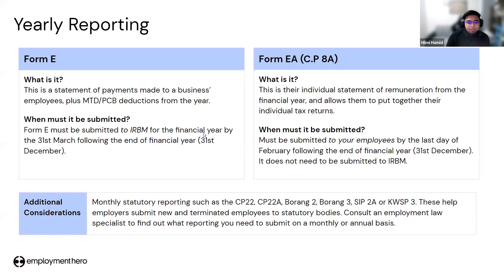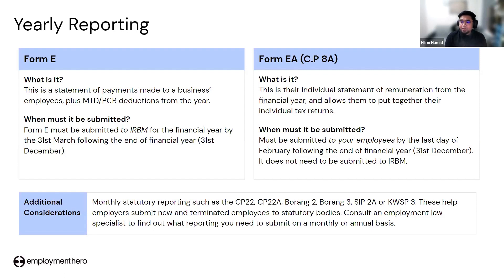For yearly reporting, especially Form E, you must submit it every year before 31st March for the previous financial year. You also need to send the EA form — which includes all earnings and additional earnings — to your employees. All yearly reporting must be done with proper documentation and correct information. These are the key reasons why you must ensure your payroll is processed correctly.